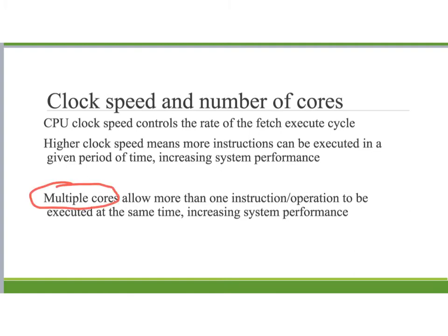A processor can contain one or more processing units — each unit is called a core. A core contains the ALU, the control unit, and the registers. Going back to our example, one computer was dual core — two cores — and one was quad core — four cores. Doubling the number of cores will not simply double the computer speed, because CPU cores have to communicate with each other through channels, which uses up some of the extra speed. But having more cores will increase processor speed, especially when running demanding software.